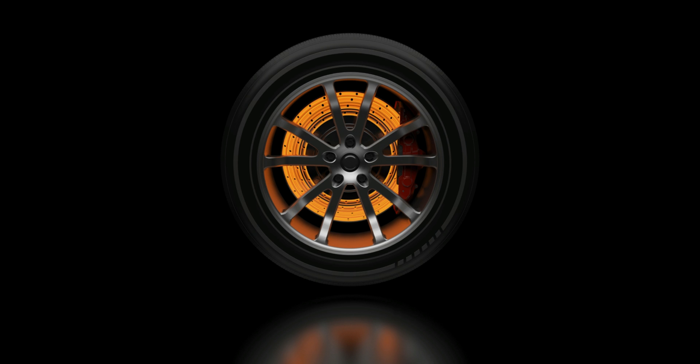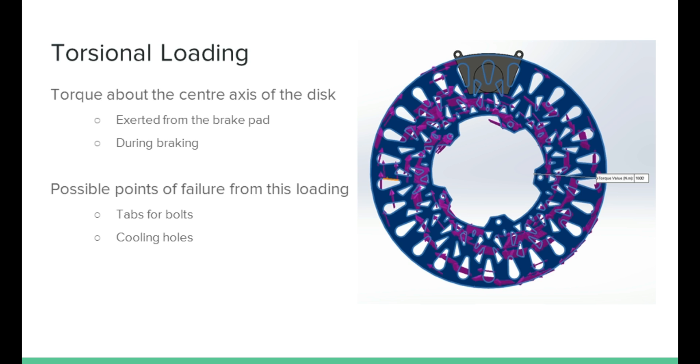How our design handles this is later explained. Our second loading condition is torsional loading of the brake disc. As seen in the diagram, the torque is exerted about the central axis of the disc, which is in and out of the page.